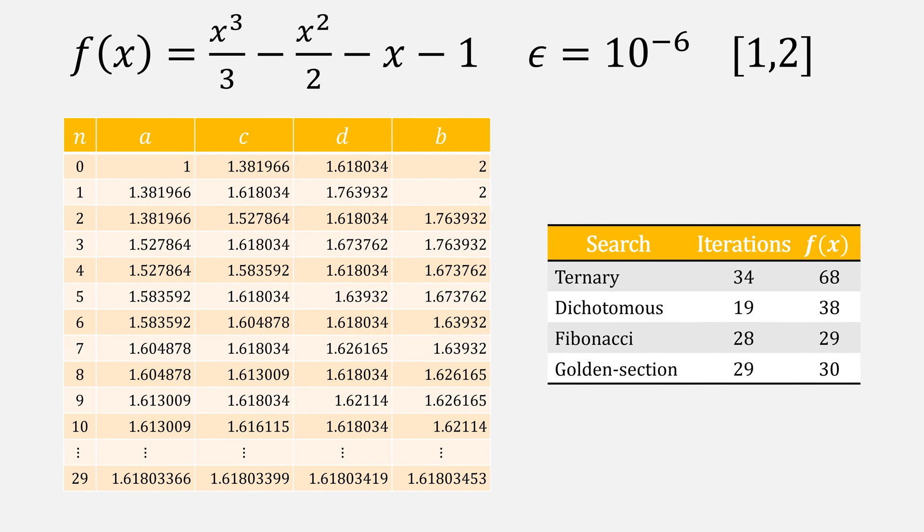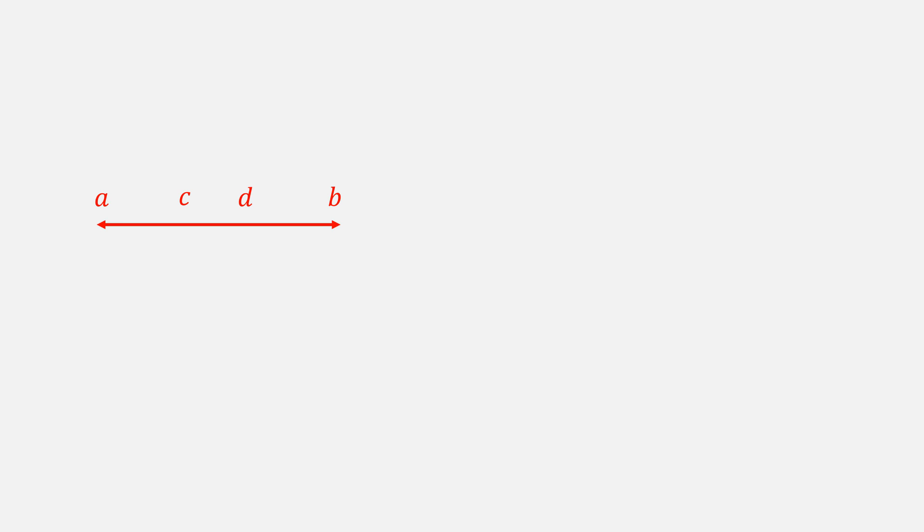Here's a table showing all of the minimum finding methods that we have discussed so far on the same example using the same epsilon and interval. Notice that dichotomous, Fibonacci, and golden section are all clearly better than ternary, with Fibonacci and golden section being the most efficient. Golden section needed one more iteration. That's because it has a different end condition than Fibonacci.